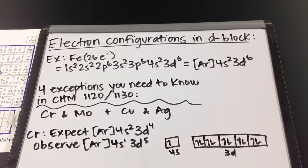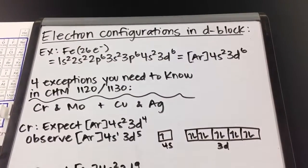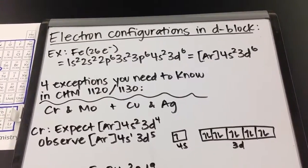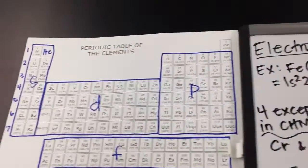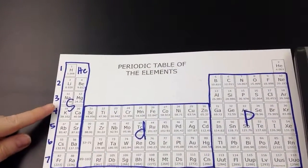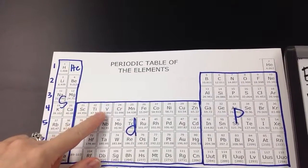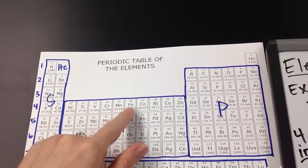Let's talk about electron configurations in the D-block. When you're in the D-block, just a reminder that when you are going into the D-block, your value of N goes down by 1. So only when you enter the D-block.